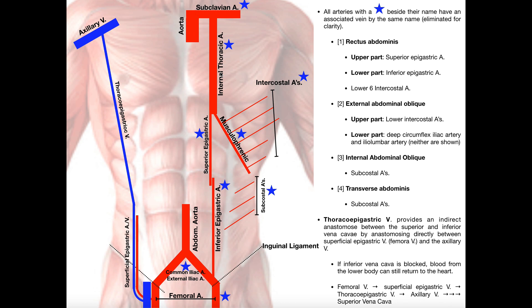We're mainly going to be talking about the blood supply to the four major muscles in the anterior abdominal wall. Those are the rectus abdominis, which are really the medial muscles. Then, off to the lateral sides of that, we have the external abdominal oblique, the internal abdominal obliques, and the transverse abdominis. Just as a quick review, the external abdominal oblique is the superficial one, and the transverse abdominis is the deepest, with the internal obliques being intermediate.